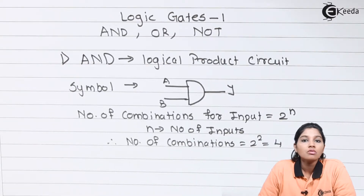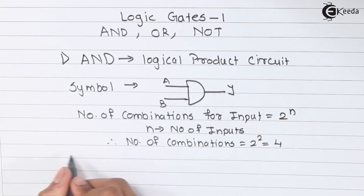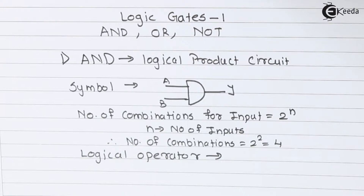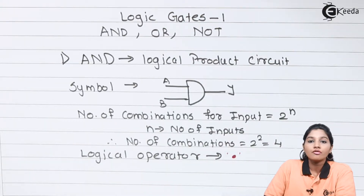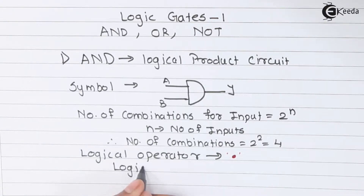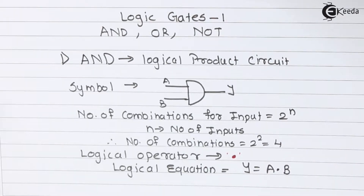Now let's see how the AND gate is represented by an equation. The operator used for AND gate is the dot operator. The output equation or logical equation can be given as Y equals to A dot B. So the dot operator is used for representing the equation of AND gate. Now let's see the truth table of AND gate.